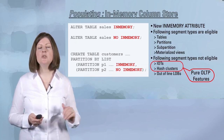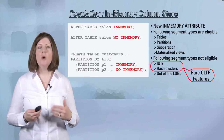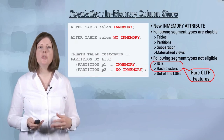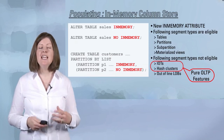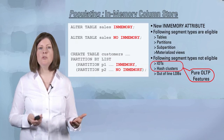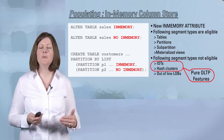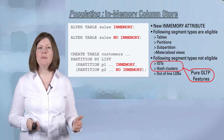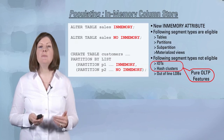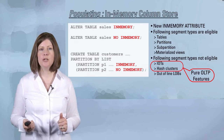We'll exclude any out-of-line LOBs when doing that population — it'll happen automatically for you. So if you forget and mark a table in memory that has only out-of-line LOBs, we'll automatically exclude that column and populate all of the others into the column store.